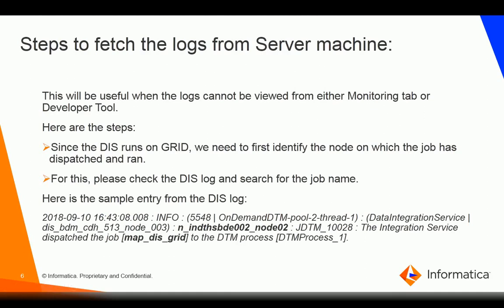The third option is if a user wants to fetch the logs from the server machine directly — logging into one of the Informatica nodes where the DIS is running and downloading the log. For that, the first step is to identify the node on which the job has been dispatched. Since the DIS is running on a grid, the job can be dispatched to any node, so it is important to first identify the correct node. This information can be fetched from the DIS log.